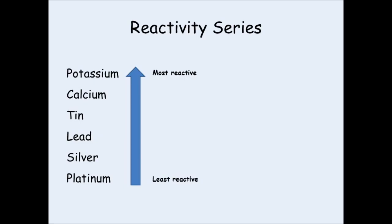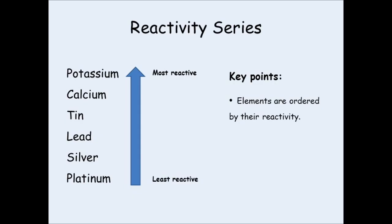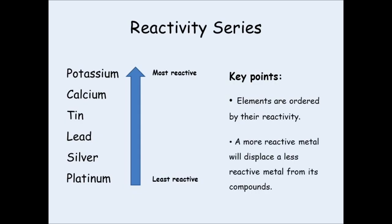There are two major rules for making a reactivity series. First, the metals have to be in order of their reactivity — they don't just go in a random order. And why is this useful? Because a more reactive metal will displace, or kick out, a less reactive metal from its compound. That second point is very important.